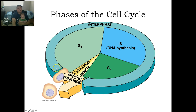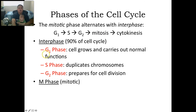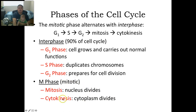The phases of the cell cycle are G1, S, G2, and the M phase, or mitosis phase, then it starts over. If you're not in the M phase, that's called interphase. G1 is the growth phase — the cell grows and carries out normal functions, basically just living life. S phase stands for synthesis — that's when new chromosomes are created. G2 is a second growth phase where you're preparing for cell division. And then the M phase is mitosis, when the nucleus divides, plus cytokinesis, when the cytoplasm divides.